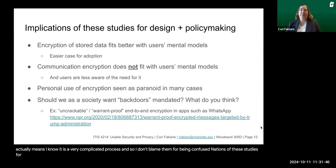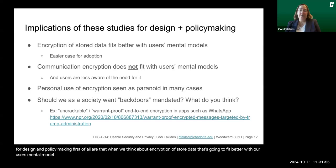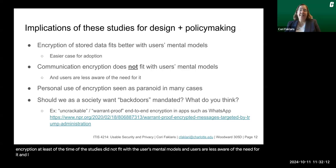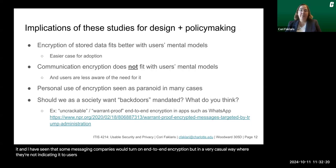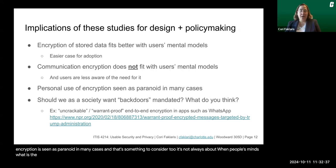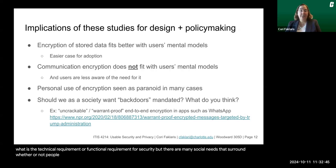The implications of these studies for design and policymaking: encryption of stored data fits better with users' mental models and is an easier case to make for adoption. Communication encryption did not fit with users' mental models, and users are less aware of the need for it. Some messaging companies turn on end-to-end encryption without indicating it to users, but people who really value it still gravitate to those products. Personal use of encryption is seen as paranoid in many cases. Security adoption isn't only about technical or functional requirements — many social needs surround whether people accept and adopt security and privacy practices.